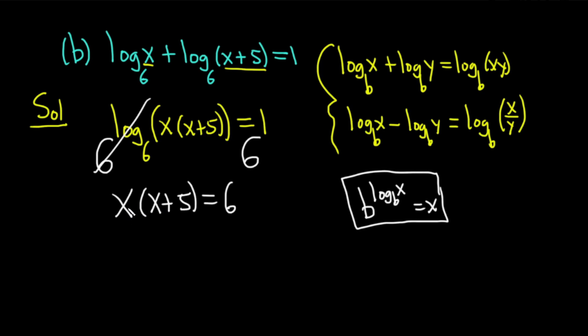At this point, we have to just distribute. x times x is x squared plus, and then x times 5 is 5x, and that's equal to 6. This is a quadratic, and usually when you get to this step, if the quadratic is difficult, you probably messed up. These are usually easy to solve. Subtract 6 so that it's equal to 0. You always want to set these equal to 0, these quadratics.